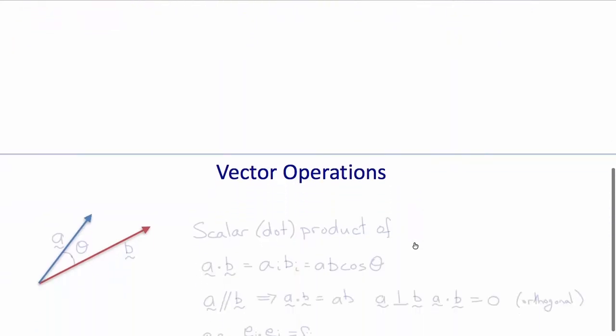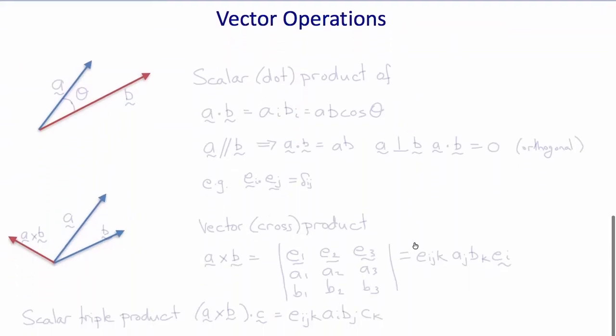Now you're familiar with operations on vectors such as the scalar or dot product of two vectors a and b. For example, if a and b are here separated by an angle theta,